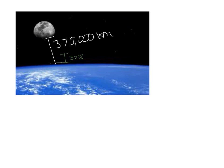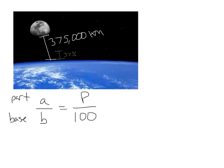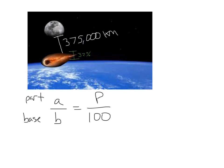So let's just refresh with the percent proportion. And remember that is the A over B, and A is the part, B is the base, or the whole, is equal to P over 100. Okay? So can we use that to help solve us how far away our little asteroid friend was? Well, actually, we can.